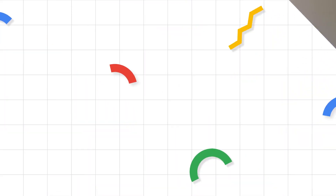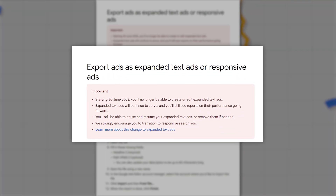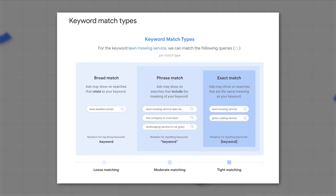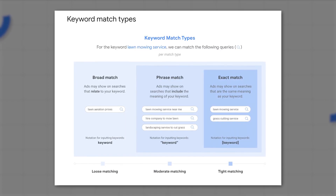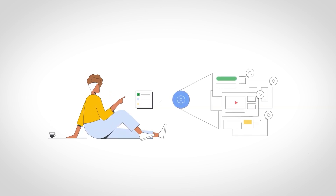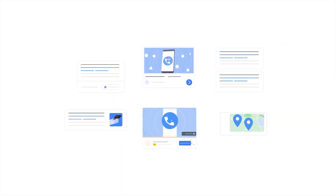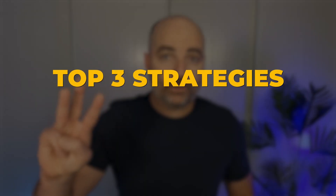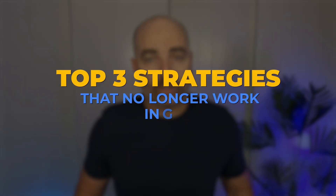These changes include replacing expanded text ads with responsive search ads, changing the way that the keyword match types function, and also introducing the new campaign type, performance max campaigns. All three of these changes have drastically changed the way that Google Ads operates, and more importantly, it's changed the way that you need to optimize your Google Ads campaigns. So because of all these changes, I want to take you through the top three strategies that no longer work in Google Ads.